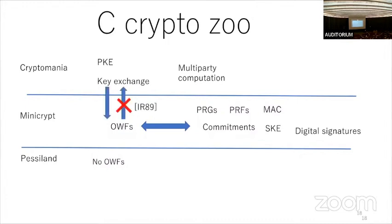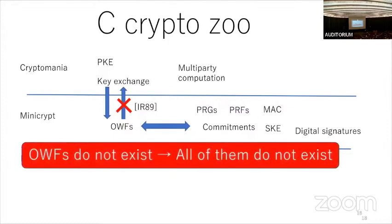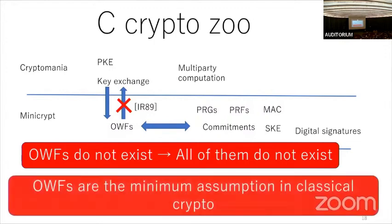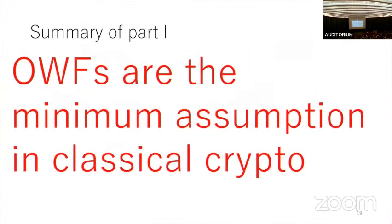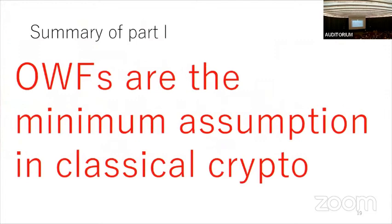The most important point from this diagram is that one-way functions are essential. If one-way functions don't exist, all of these primitives don't exist, because they are equivalent to or imply one-way functions. This means if one-way functions don't exist, almost all classical cryptography becomes impossible. That's why one-way functions are the minimum assumption in classical cryptography.